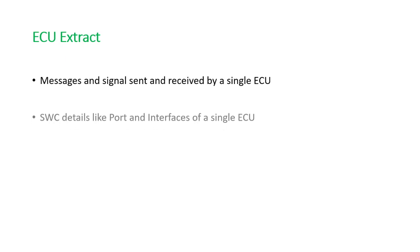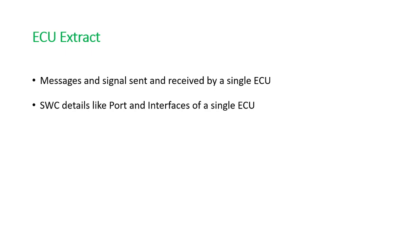The second type is the ECU Extract. In the previous slide you saw a group of ECUs — ECU1, ECU2, ECU3. The ECU Extract is a part of the system configuration file. When the system configuration prepares the database for multiple ECUs, it is broken down per ECU — so for ECU1 there will be one ECU Extract, for ECU2 one ECU Extract, and so on. An ECU Extract contains the messages and signals sent and received by a single ECU, as well as the ports and interfaces belonging to that single ECU. You can think of the ECU Extract as a subset of the system configuration.